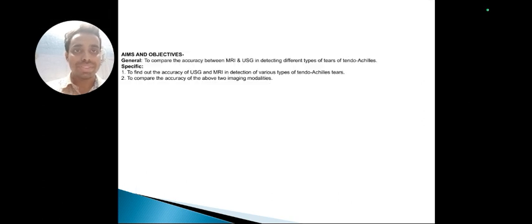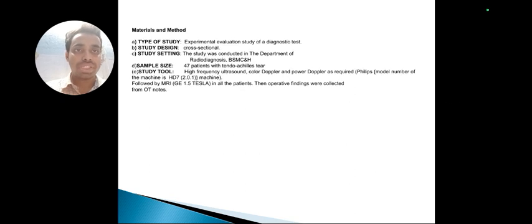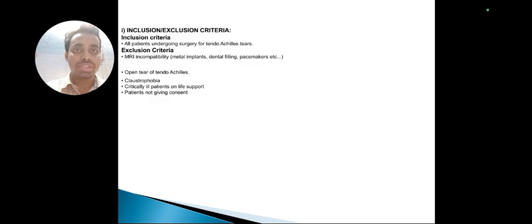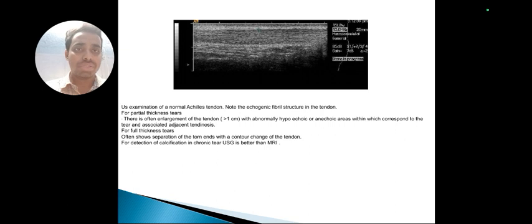The general objective is to compare the accuracy between MRI and USG in detecting different types of tendo-Achilles tears. This is a cross-sectional study with a sample size of 47 patients. All patients undergoing surgery for tendo-Achilles tears were included, with exclusions being open tear, claustrophobia, clinically ill patients, and those not giving consent. This shows a normal tendo-Achilles with basic normal fibrillar structure.